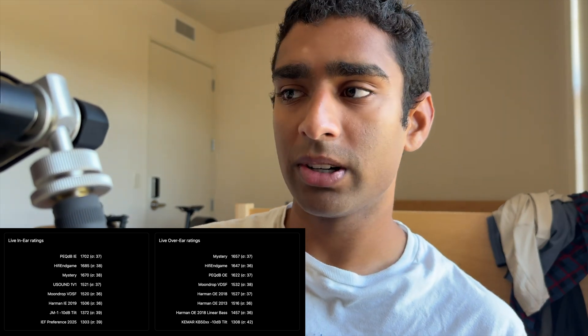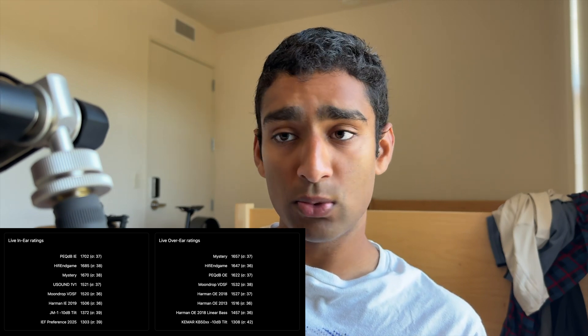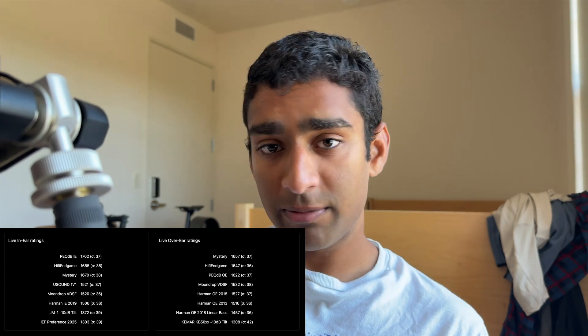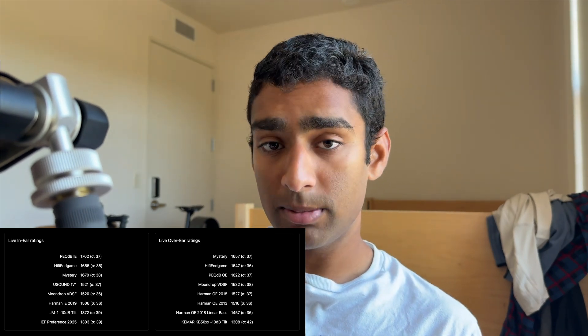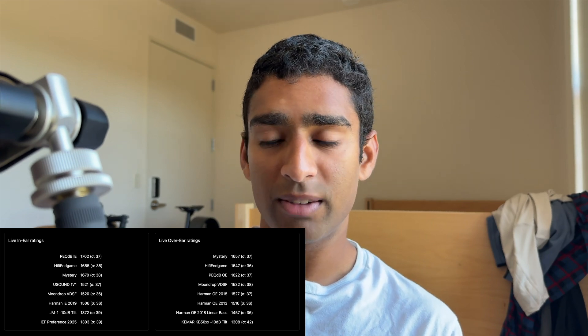The Mystery target, the HiFi Endgame target, the PEC-DB over-ear target. The little O letter is the Greek symbol for sigma and represents one standard deviation. So, for example, 1702 minus 37 times 2 would be 1628, meaning that to be 95% sure someone would prefer the PEC-DB in-ear target to another target curve, that target curve would have to score below 1628 to be out of the 95% confidence interval.